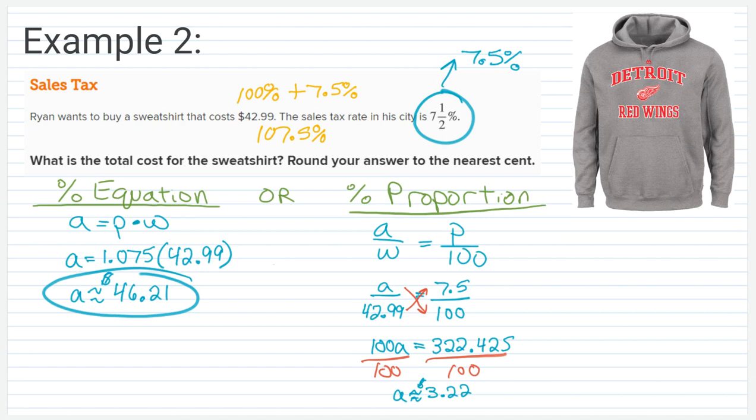Again, not the final answer. Because that is just the amount of tax that is being added on to my original price. So we still have one more step, which is to take $42.99 and we're going to add that to $3.22. So if I do $3.22 plus 42.99, you get your answer of $46.21.